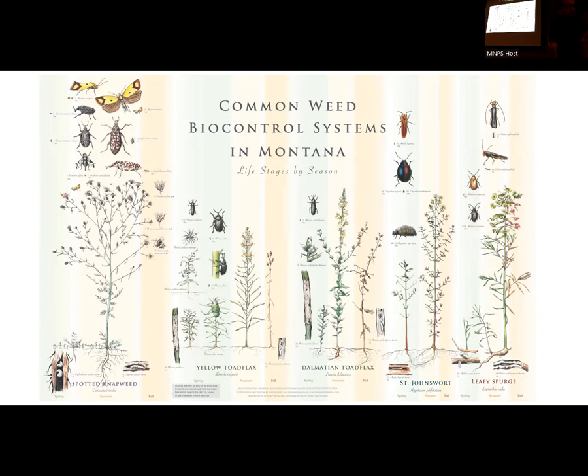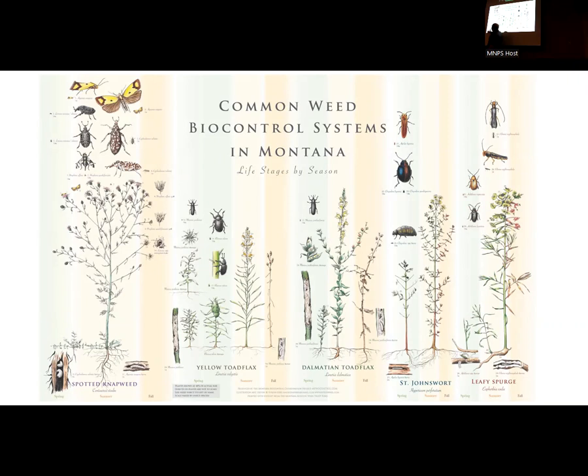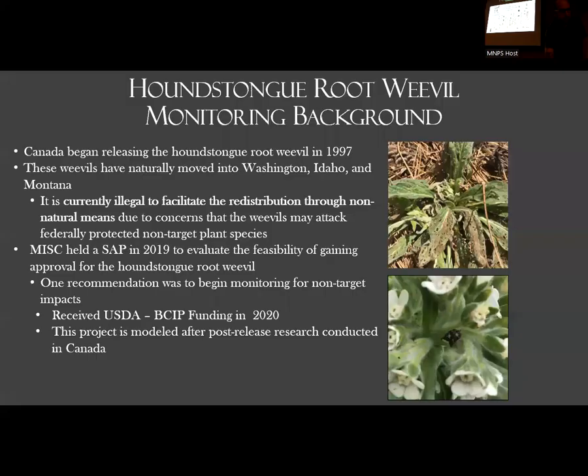This is an example of one of the educational materials that program has developed. The colors aren't quite coming through, but it's easy to identify these species when they're adults — not so easy to identify them or know if they're in your target weeds at any other time of year. So this shows the development of the insect and how you would identify it over the season — it goes from spring, summer, fall, spring, summer, fall — so you can have this and look through to identify whether you have those species on your property.